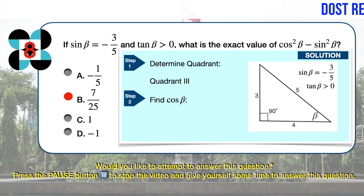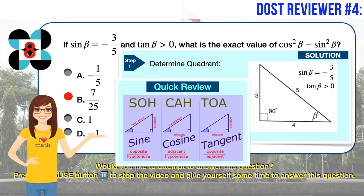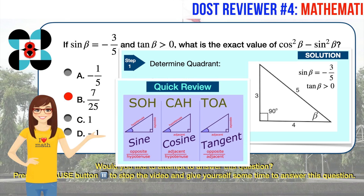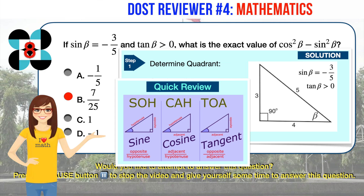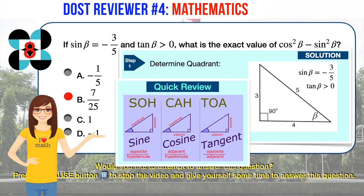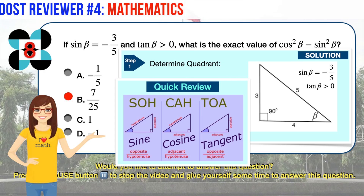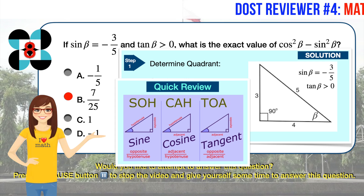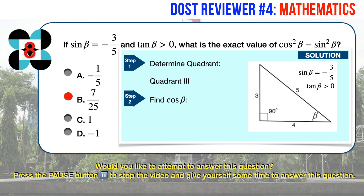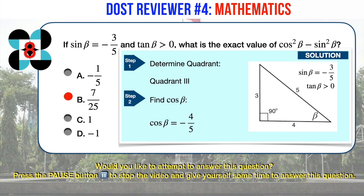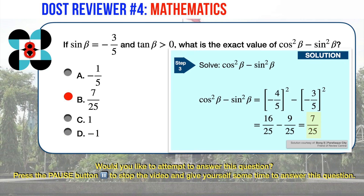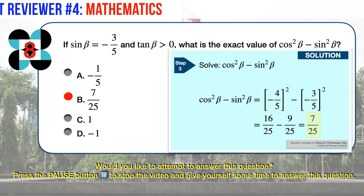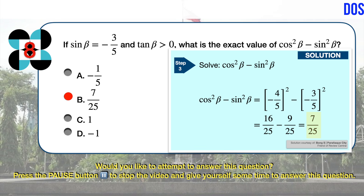Now let's find cosine beta. Using the SOHCAHTOA rule, cosine is adjacent over hypotenuse, which is 4 over 5. But since beta is in the third quadrant where cosine is also negative, cosine beta equals minus 4 over 5. Substituting both values into cosine squared beta minus sine squared beta, we arrive at 7 over 25 as the correct and final answer.